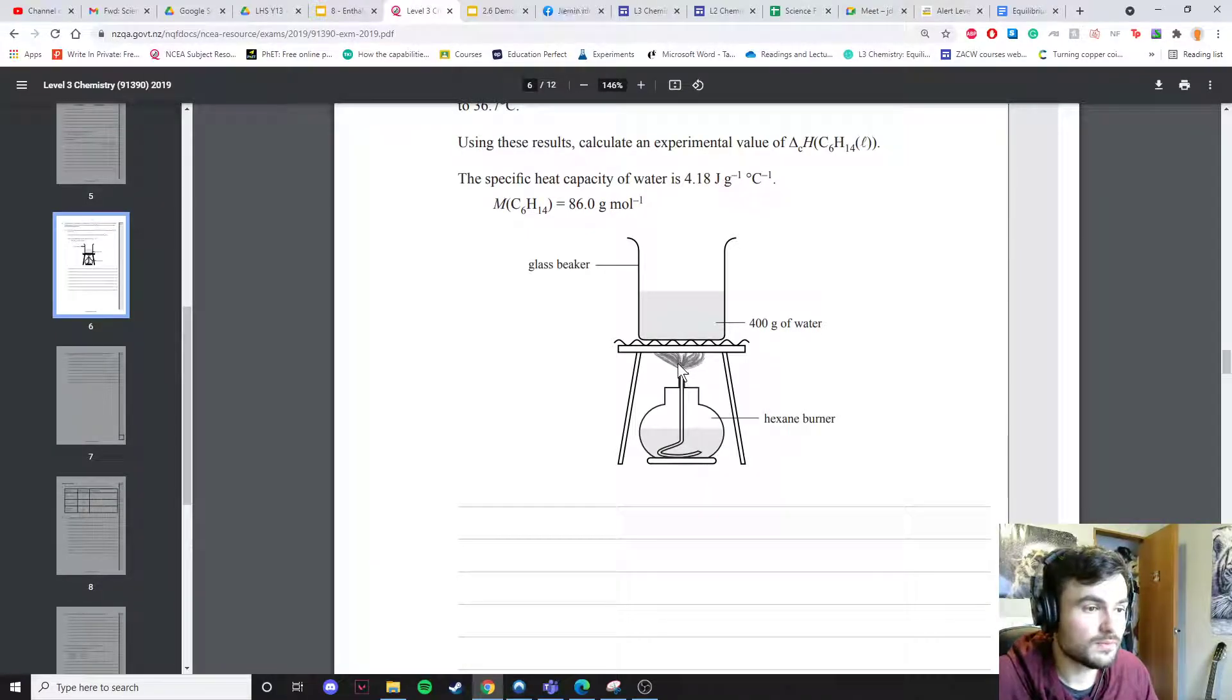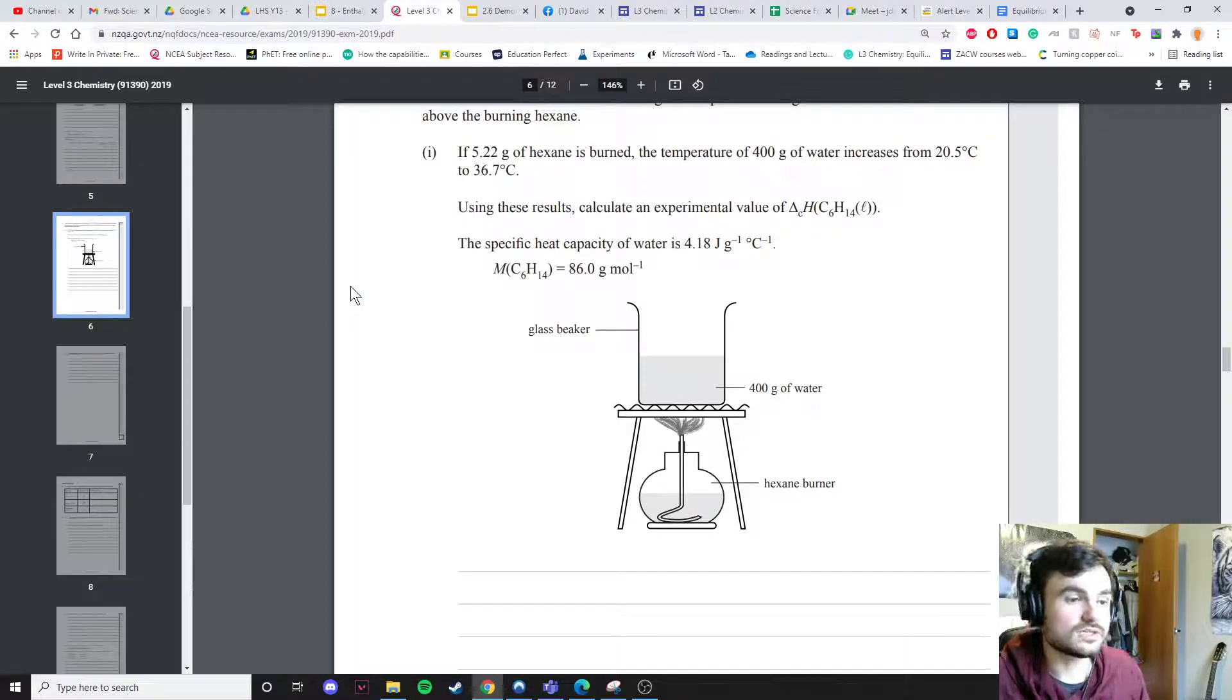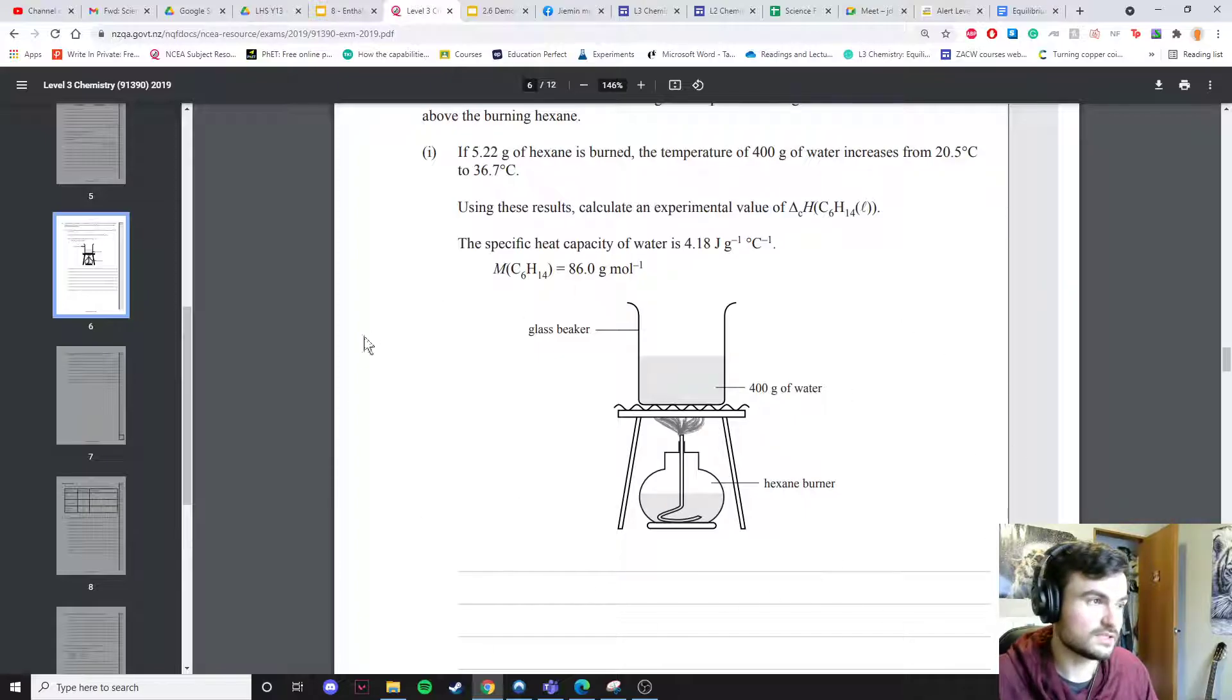Heat can escape when you burn the hexane. You're not just heating up the water. The energy is going into heating up the tripod or the glass or just escaping into the air. These are all ways that heat could escape and not go into heating up the water, which is what we're measuring. That was just something about the accuracy of this technique.